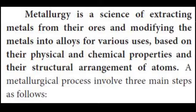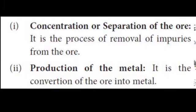A metallurgical process involves all three main steps. What are the three main steps? The first step is concentration or separation of the ores. It is the process of removal of impurities from the ores.